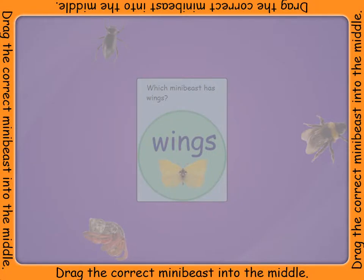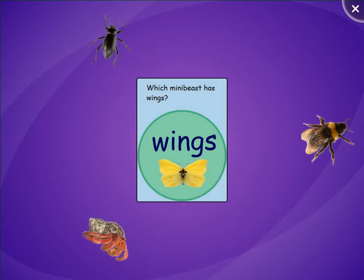Drag into the middle the picture of the minibeast that has body parts that match the picture of the minibeast in the middle of the table. For example, if you see a picture of a butterfly, you would need to drag into the middle the picture of another minibeast that has wings. Which minibeast has wings?